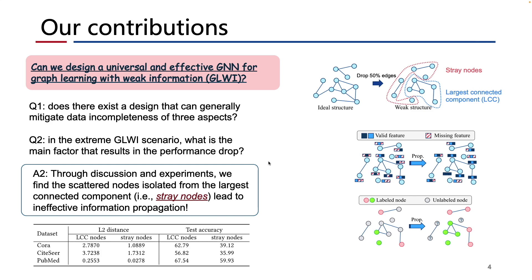Then, for the extreme GLWI scenario, we find that scattered nodes isolated from the largest connected component, that is, the stray nodes, lead to inefficient information propagation, which can severely hurt feature completion and signal propagation in GNN.